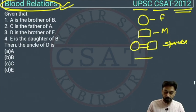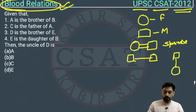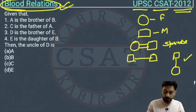Siblings are represented by a horizontal line, and a vertical line represents the generation — father, son, or daughter. So parent-child relationships are represented by a vertical line.